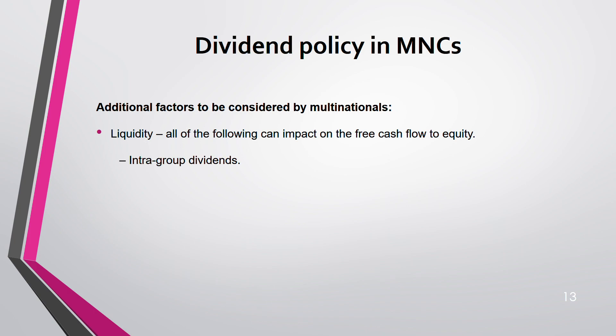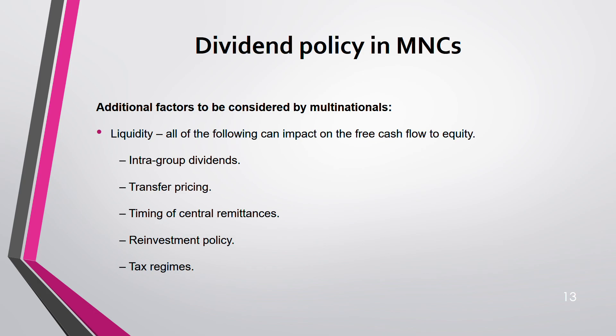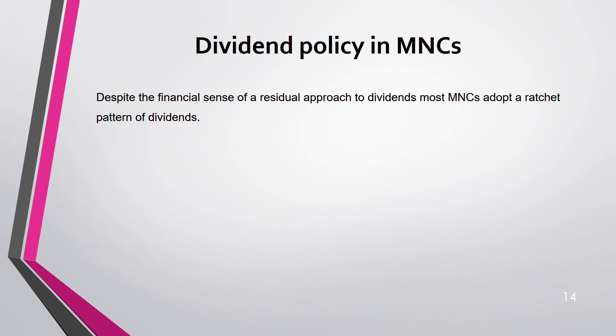Additional factors affecting MNC dividend capacity include: intra-group dividends, transfer pricing, timing of central remittances, reinvestment policy, tax regime, and reorganizations. Despite the financial sense of a residual approach to dividends, most MNCs adopt the ratchet pattern of dividends.